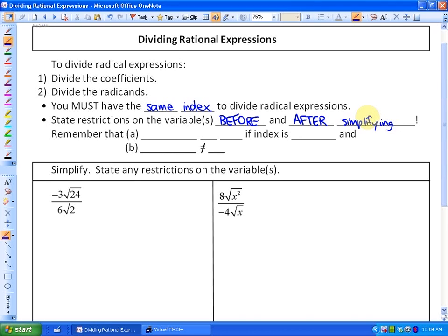As far as restrictions go, a few things to remember: the radicand must be greater than or equal to 0 if the index is even. And something that's going to come up when we're dividing rational expressions is that the denominator cannot equal 0 because you can't divide by 0 in math.